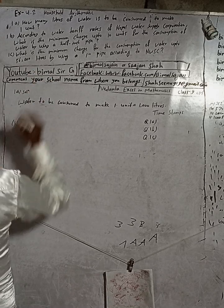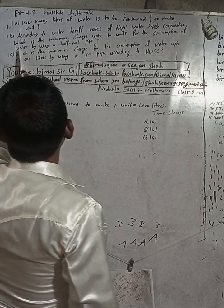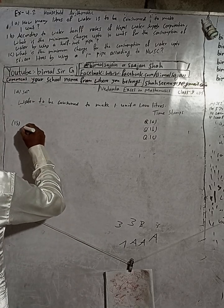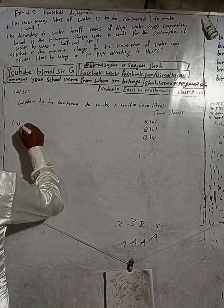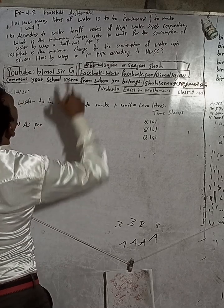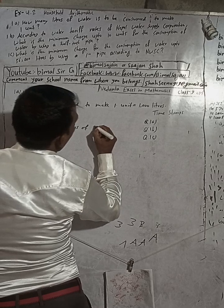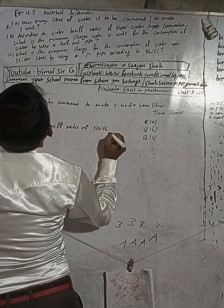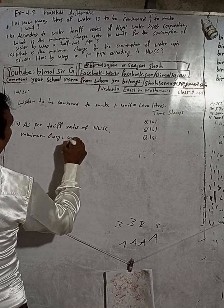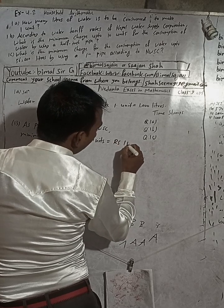Question 1b: According to the water tariff rates of Nepal Water Supply Corporation, what is the minimum charge up to 10 units for the consumption of water by using a half-inch pipe? As per the tariff rates of Nepal Water Supply Corporation, the minimum charge up to 10 units is Rs. 110.